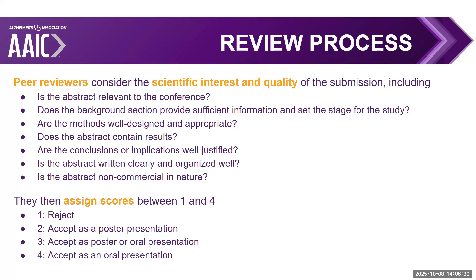Abstracts that get accepted may receive a score of two, three, or four. A score of two might be accepted for a poster presentation. A score of three might be accepted for a poster or oral presentation, so it could tip either way. Scores of four will be the ones really considered for oral presentations on the different session stages.